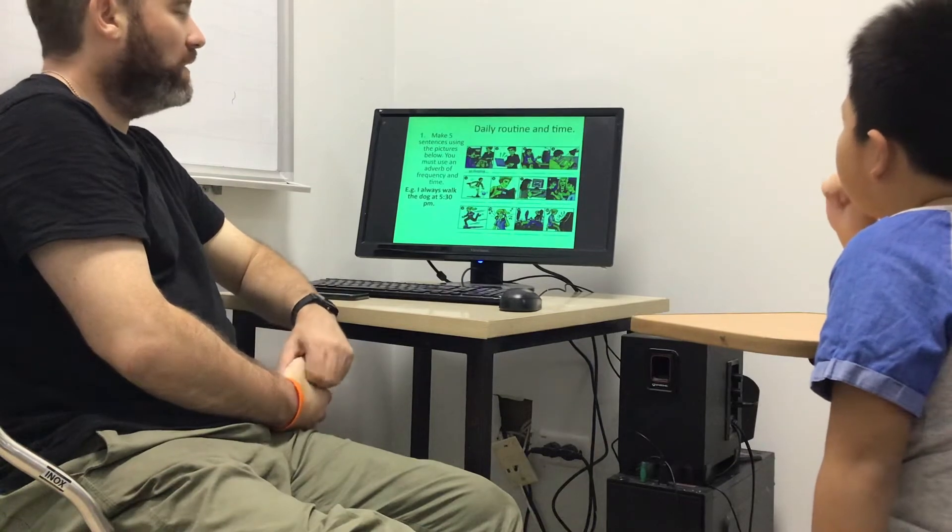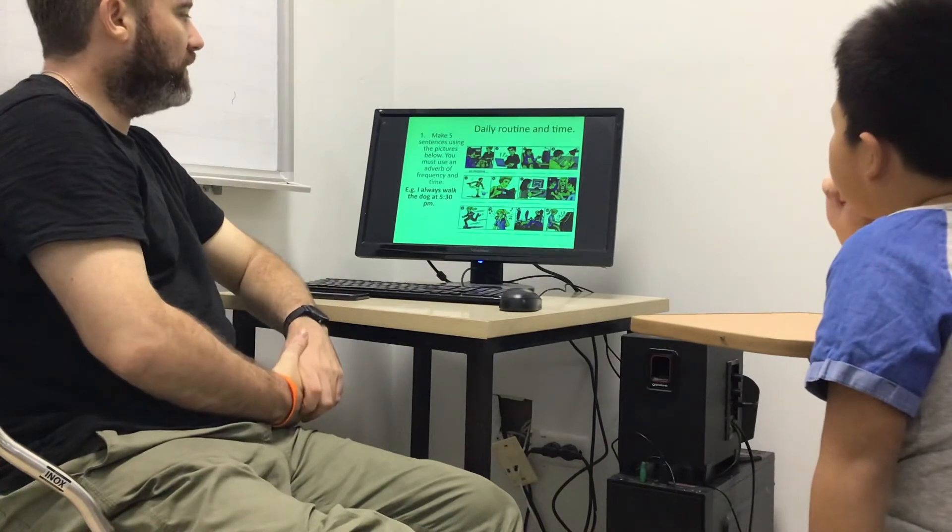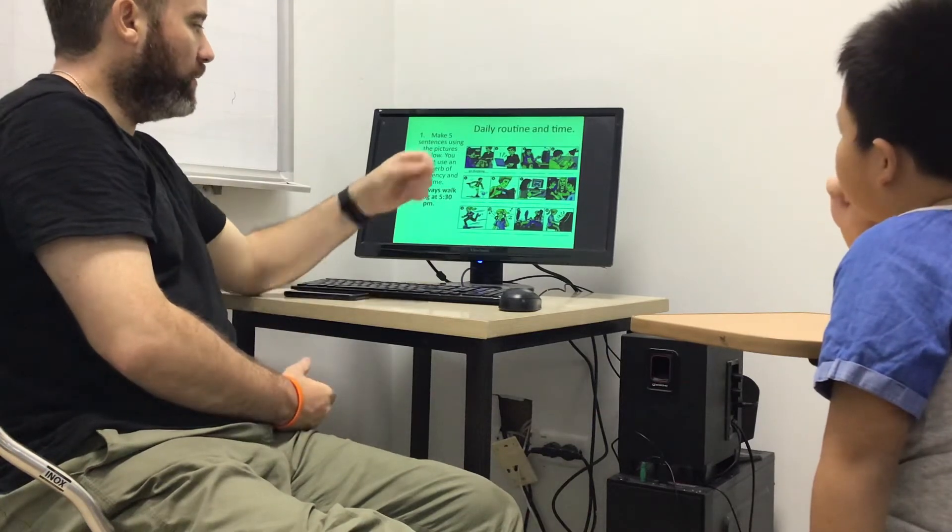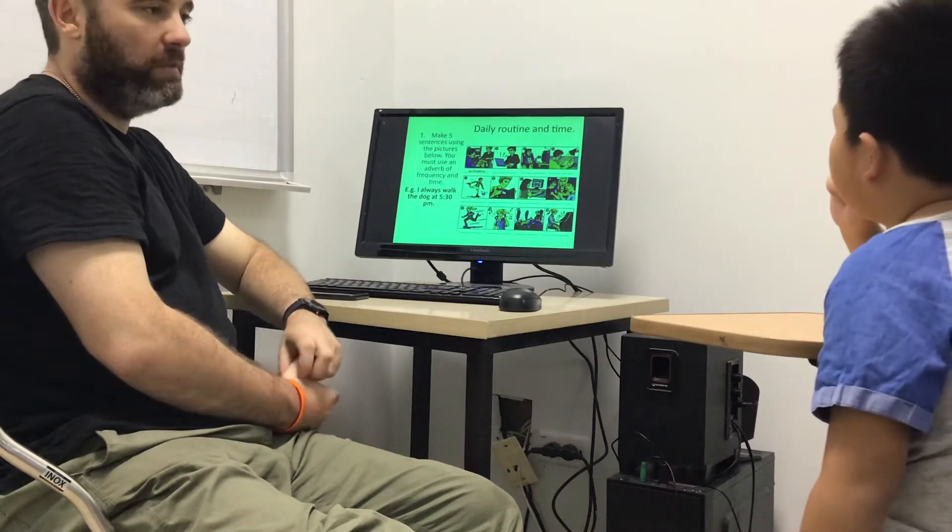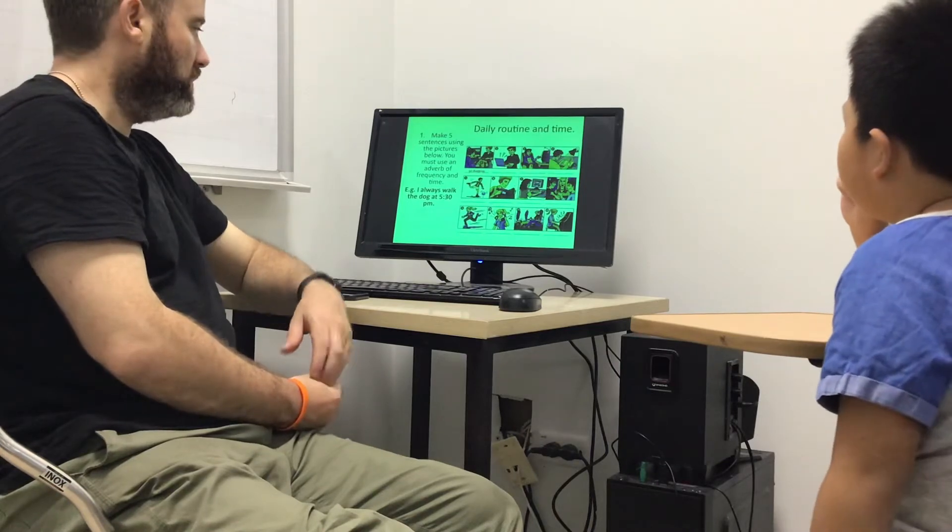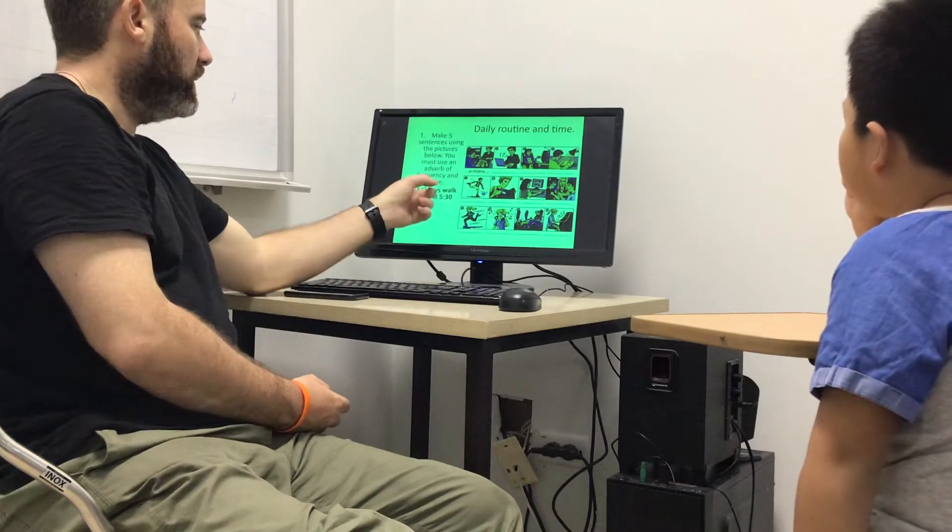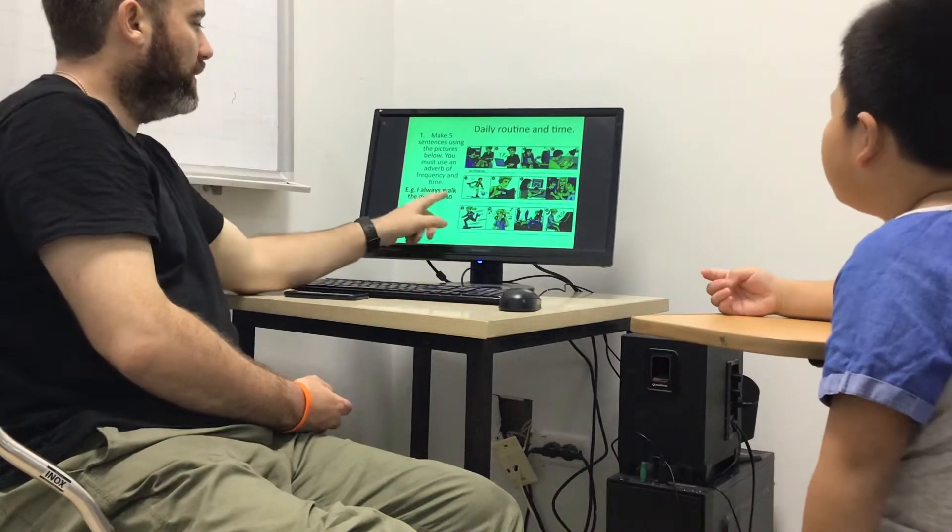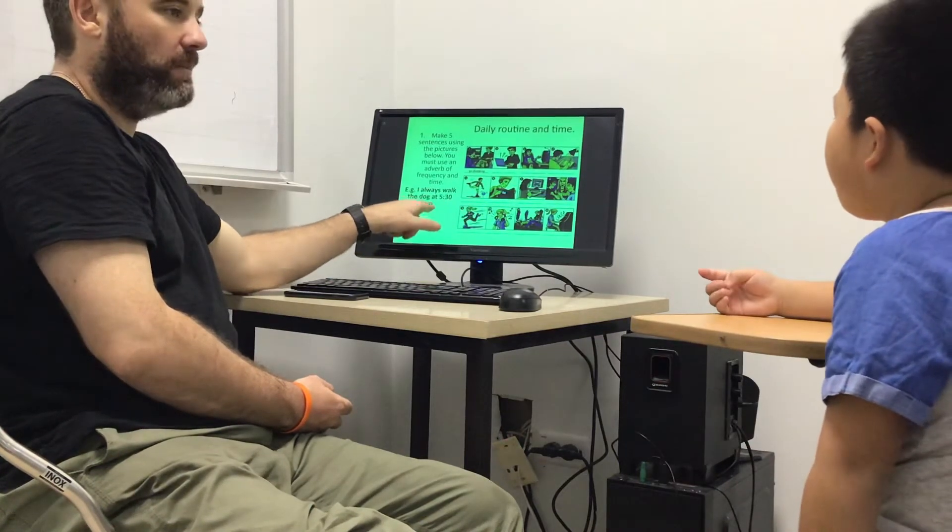Daily routines and times. Make five sentences using the picture. So you must use an adverb: sometimes, often, never, always, and then the time. So there's a dog. I always walk the dog at 5:30 PM. Okay.